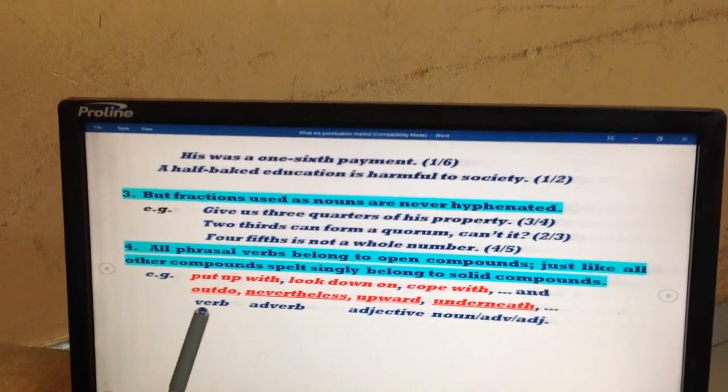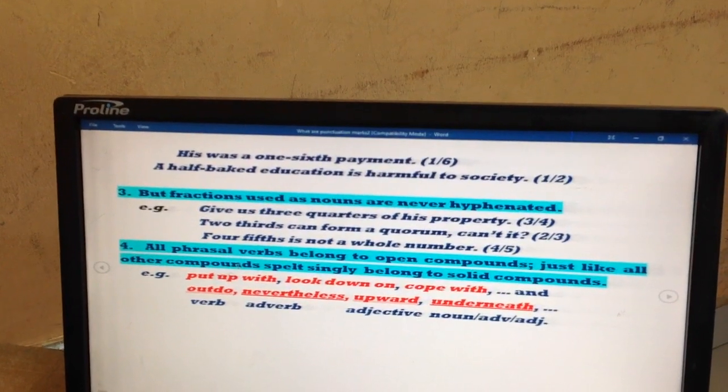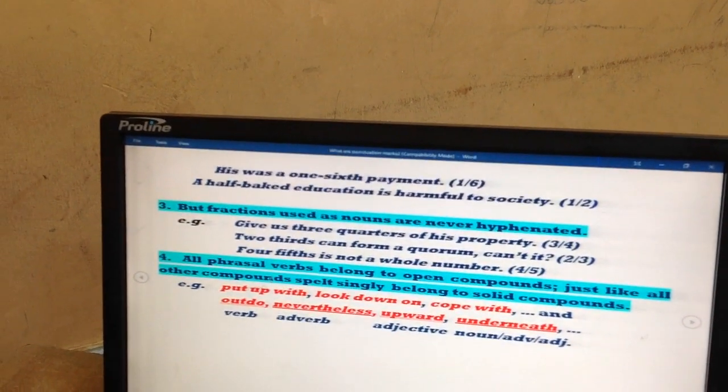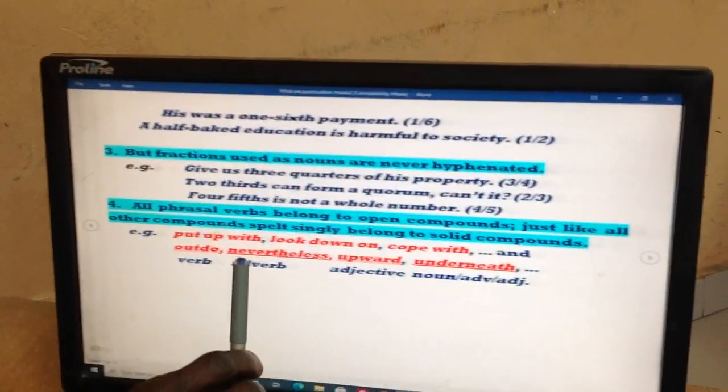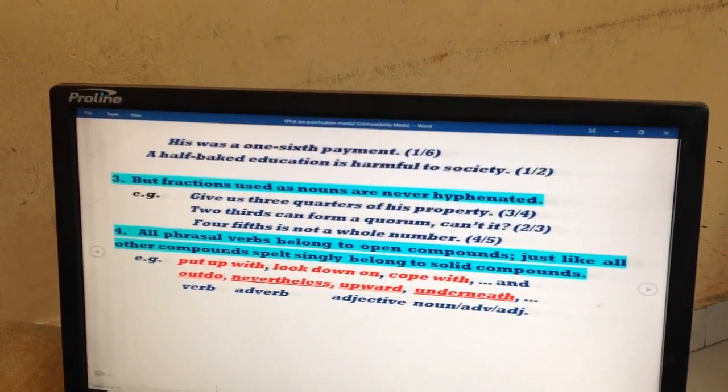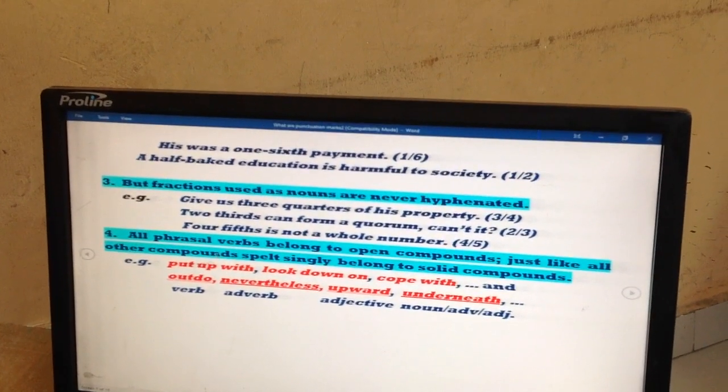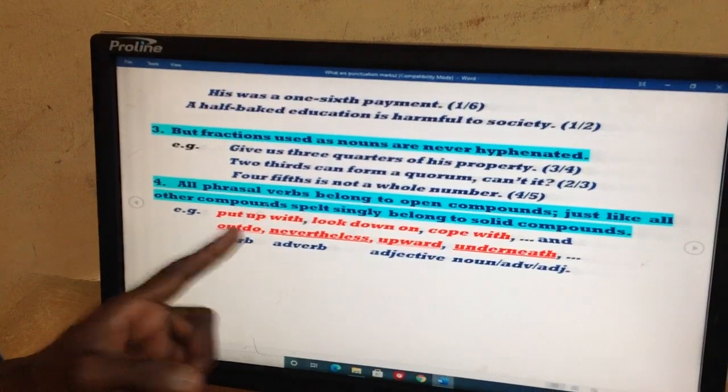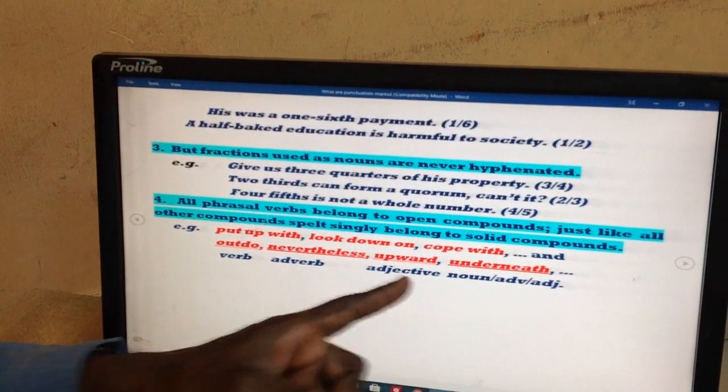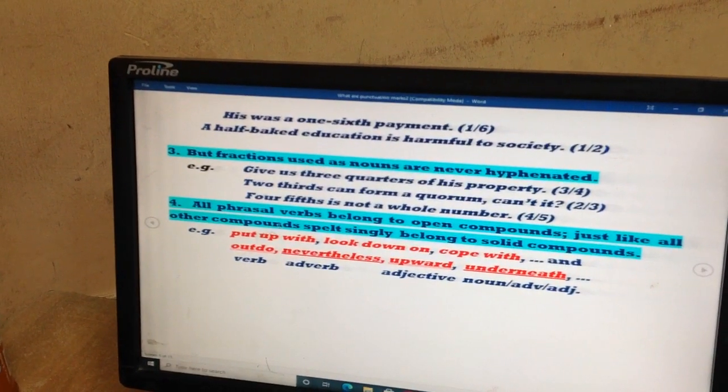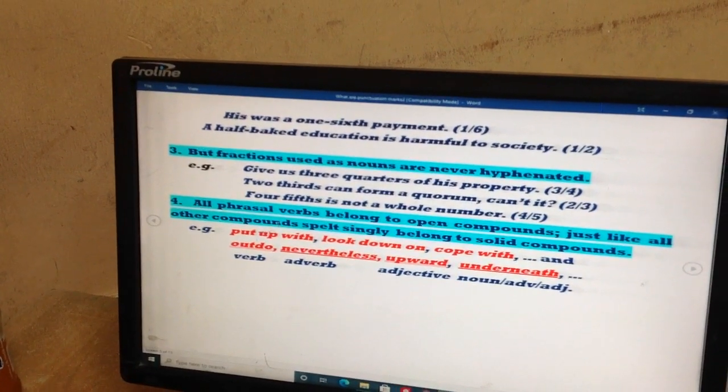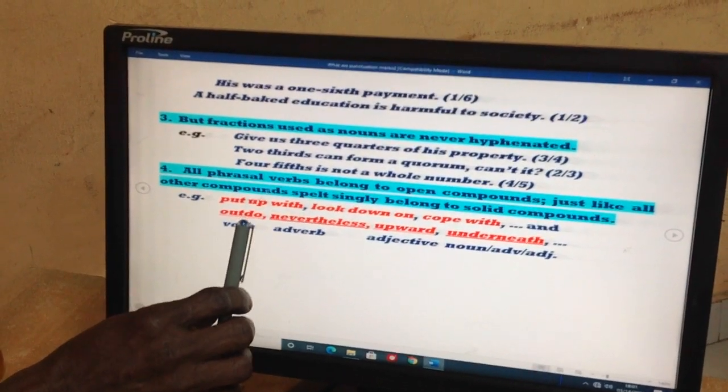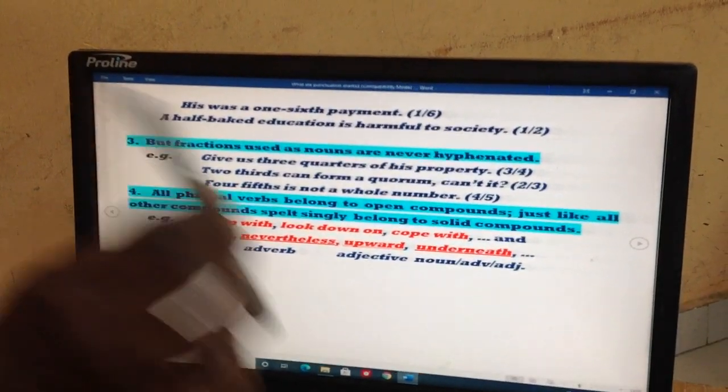We want to include also all phrases of verbs. Look down on: verb, adverb, preposition. All the phrasal verbs in English are what we call open compound. Because although there are three or two, they carry, they express only one meaning. Also, many other words that consist of more than one word are also called solid compound. Like to outdo, to outlive. My wife died five years ago. I'm still alive. I've outlived her. There is out and there is leave. This is a solid compound because they carry one meaning.